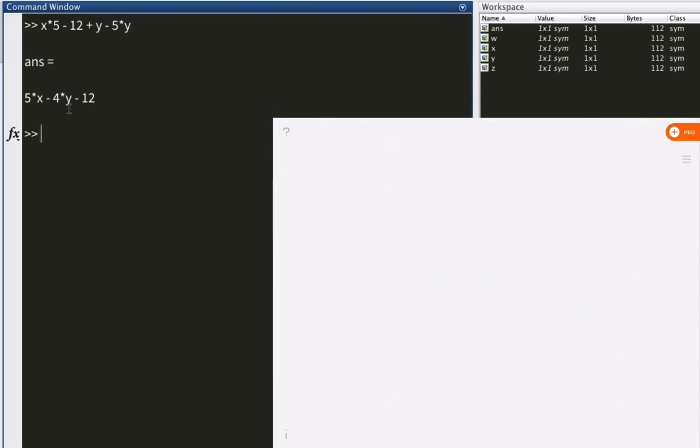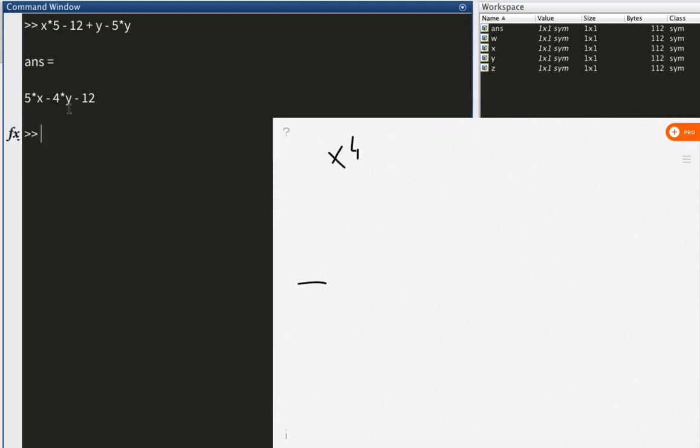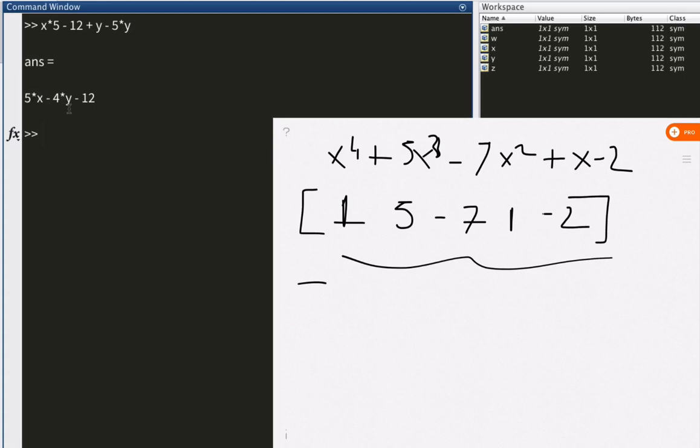So another question while we're at it. Do you remember how we define polynomials in MATLAB? It was just like this. For example, this is our function x to the fourth power plus 5x cubed minus 7x squared plus x minus 2. This is how we do it. Coefficient 1, coefficient 5, coefficient negative 7, 1, and negative 2. And you put it in a vector and this is your polynomial.